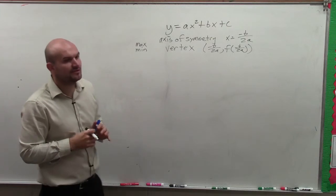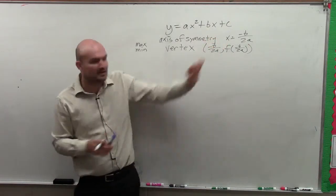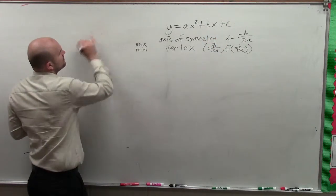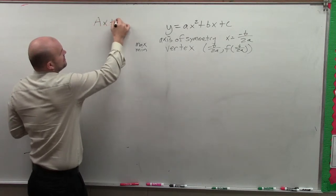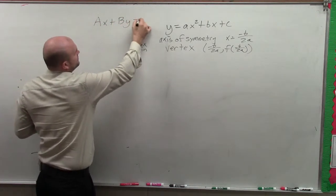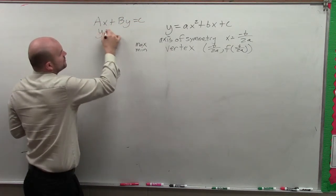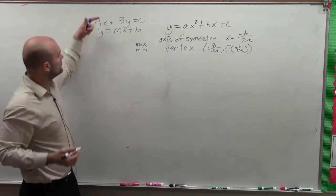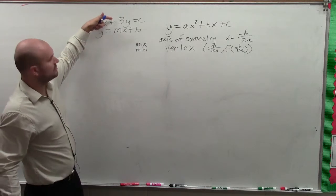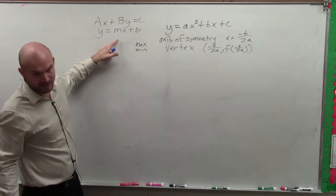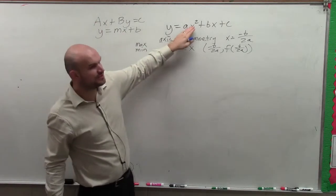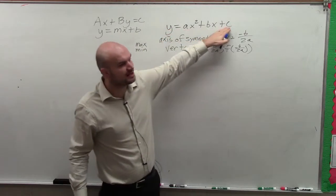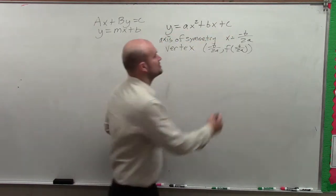All right, so now what we're going to learn is a different way that we can represent quadratics. Remember how we had lines? Sometimes we had ax plus by equals c, and then we also could write lines as y equals mx plus b. And usually when we graphed, if we had something in this form, a lot of times we'd just rewrite it in that format. Well, the same thing is with quadratics. We have quadratics that are going to be in this format, which is our standard form.